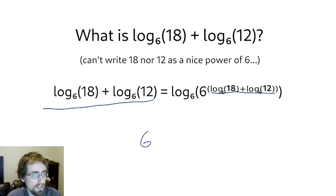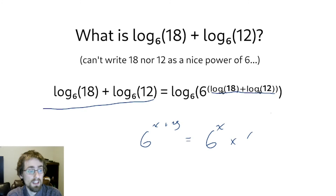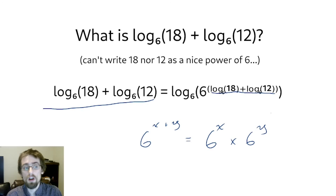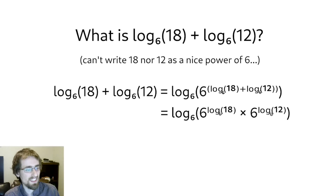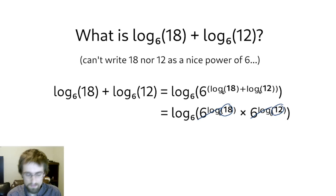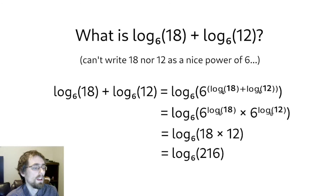I have 6 to the power of log base 6 of 18, plus log base 6 of 12 — that's 6 to the power of something plus something else. Using the exponent law that 6 to the x plus y equals 6 to the x times 6 to the y, I split this into 6 to the log base 6 of 18, times 6 to the log base 6 of 12. The base of 6 cancels with the log base 6 in each term, and I'm left with 18 times 12.